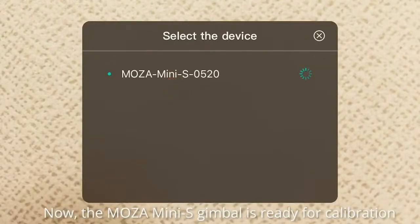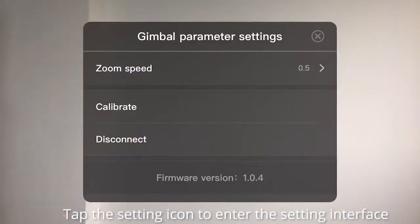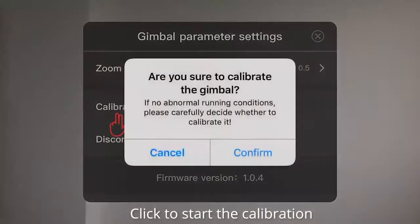Now, the gimbal is ready for calibration. Start the advanced calibration. Tap the gimbal icon to enter the setting interface. Click to start the calibration.